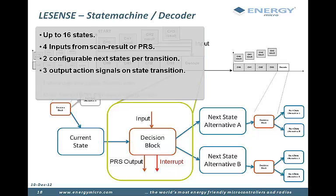Three output action signals on state transitions. It can also issue an interrupt on state transition. And there is one transition per scan sequence.